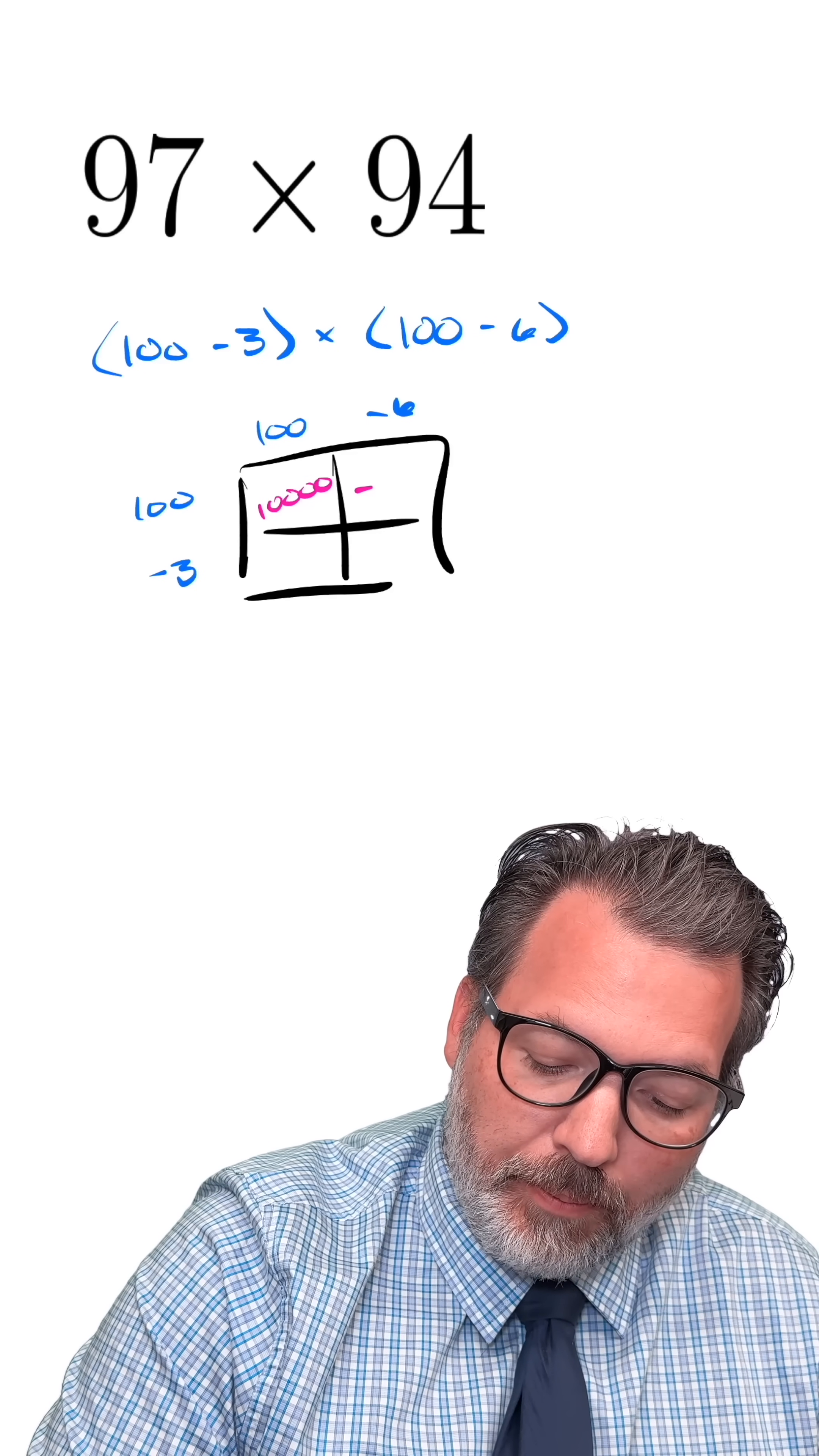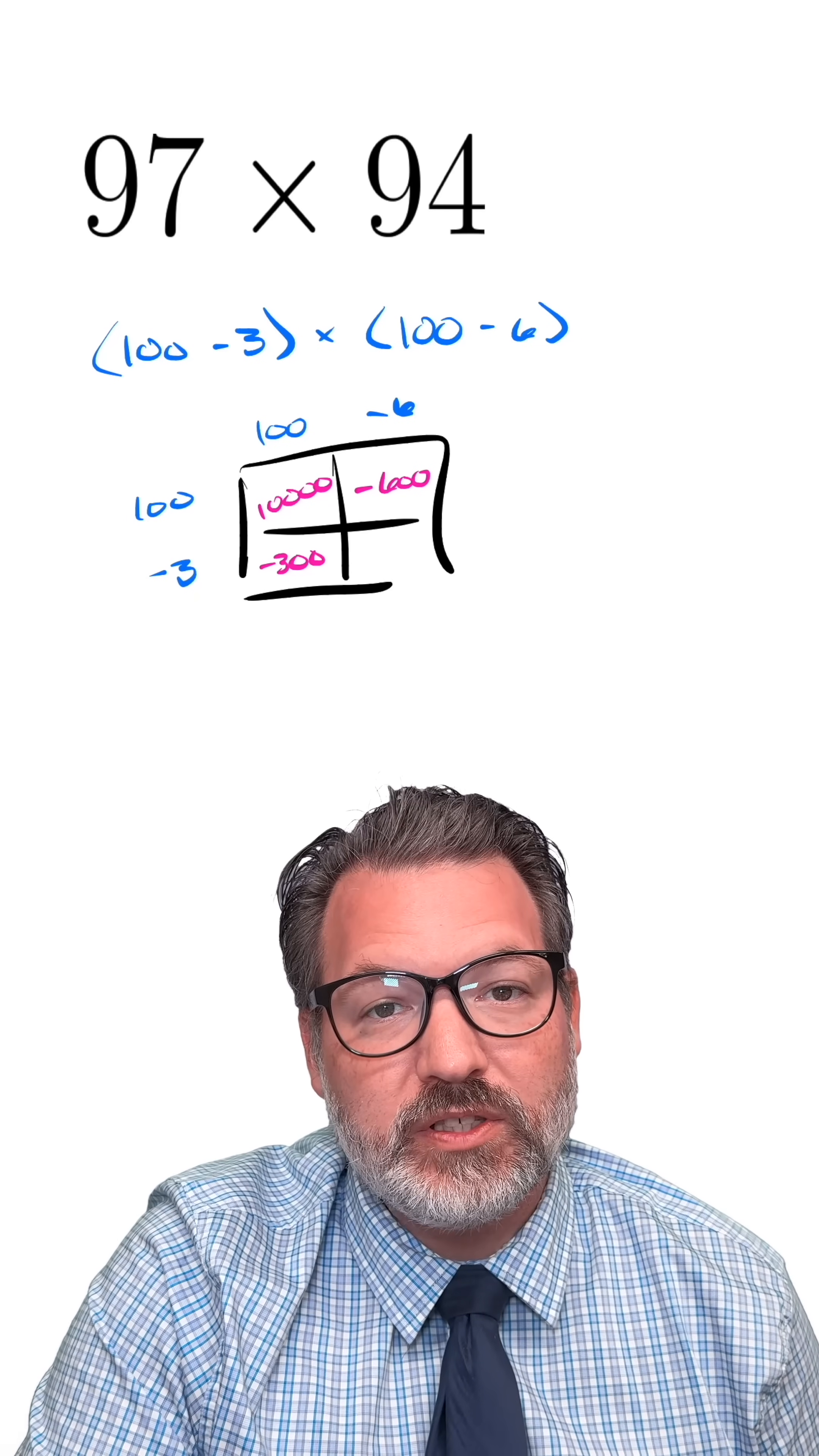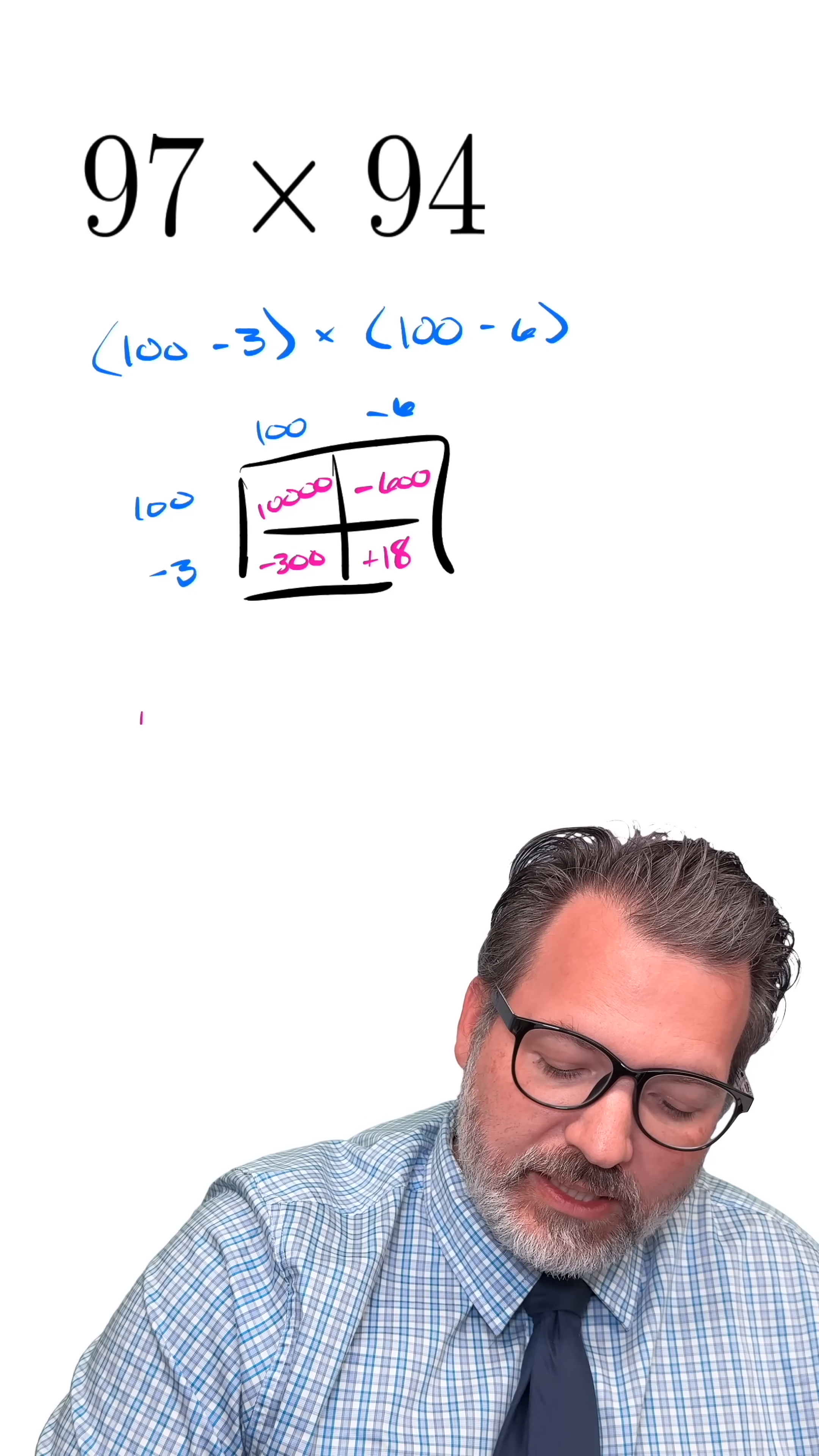100 times the minus 6, which is minus 600. 100 times the minus 3, which is minus 300. And then the negative 6 times the negative 3 for this bottom right-hand corner, which makes positive 18. As we add together,